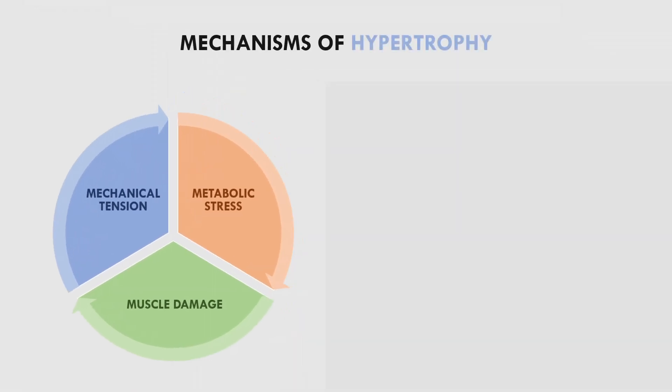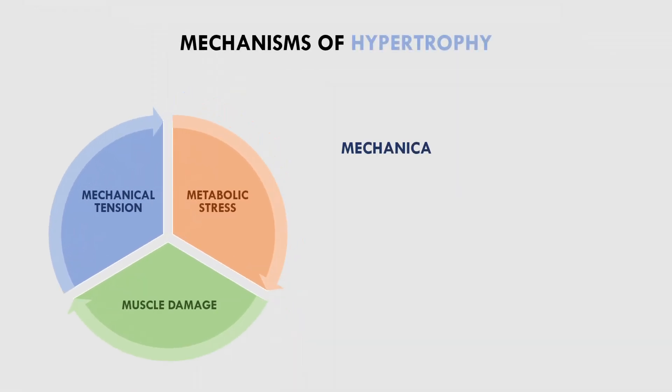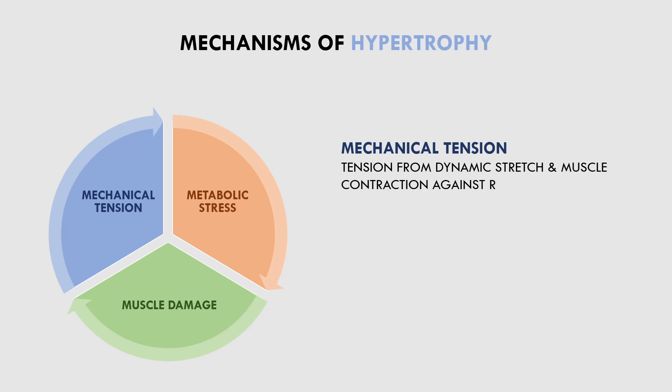Mechanical tension refers to tension experienced by the muscle through dynamic stretch and contraction against resistance. It seems that mechanical tension is the primary driving factor of muscle hypertrophy.